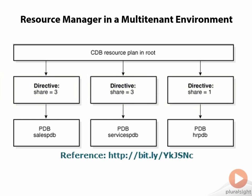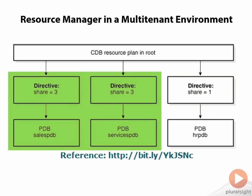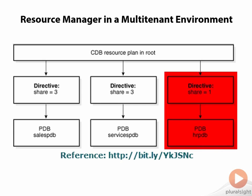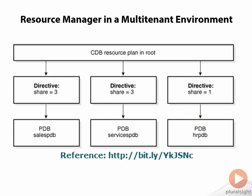In this example, we have the PDB Sales and the Services PDB both running at equal resource priority with a share value of 3. The Human Resources PDB is running with a lower share number, so that lower share number automatically puts that PDB at a lower level of resource access and priority.